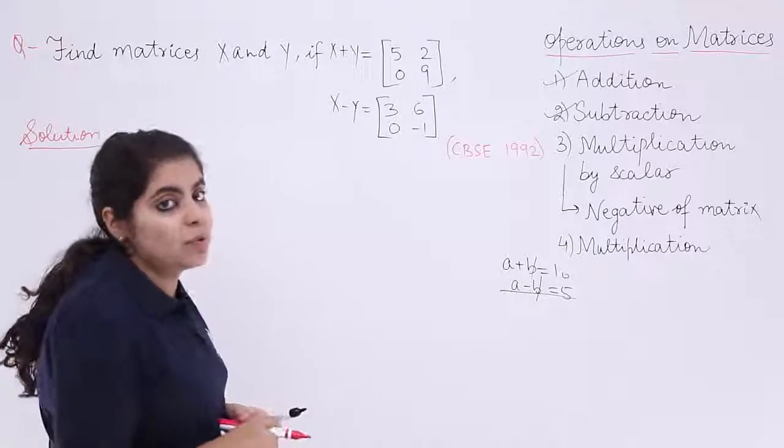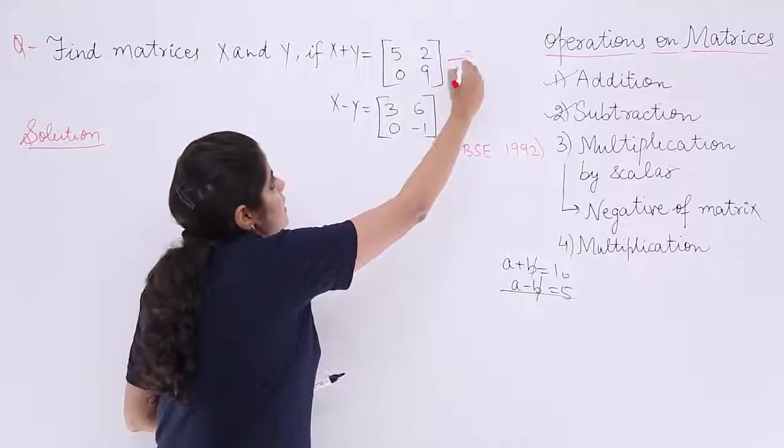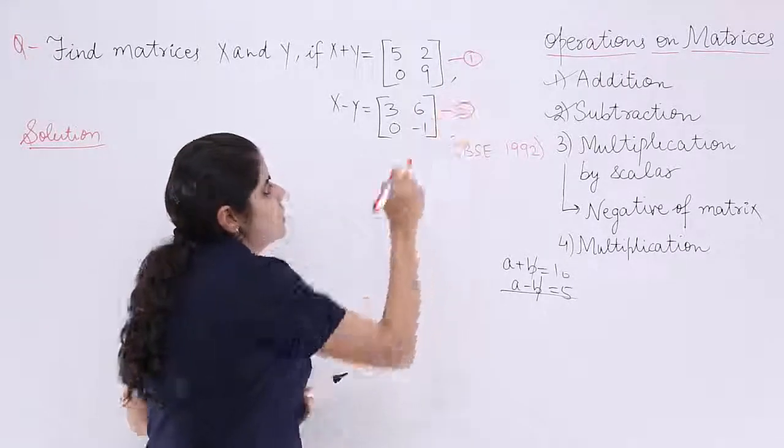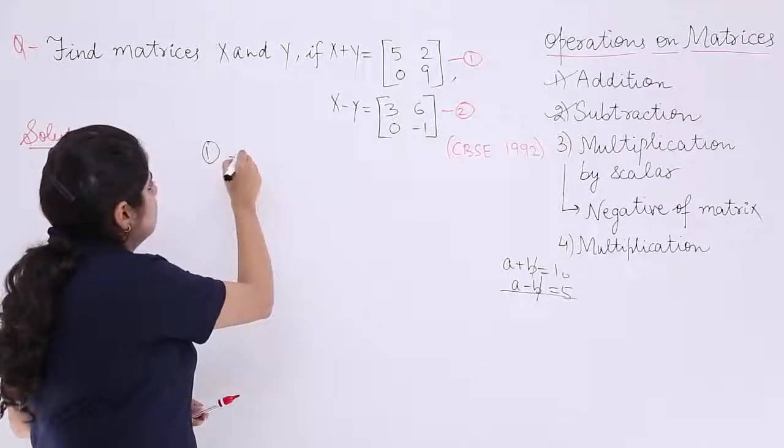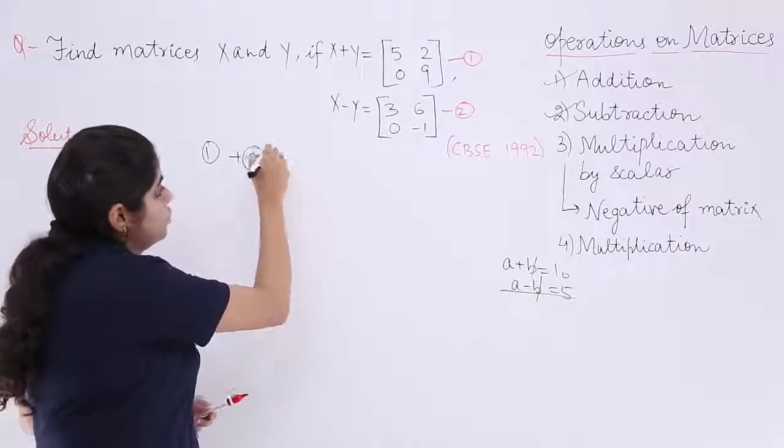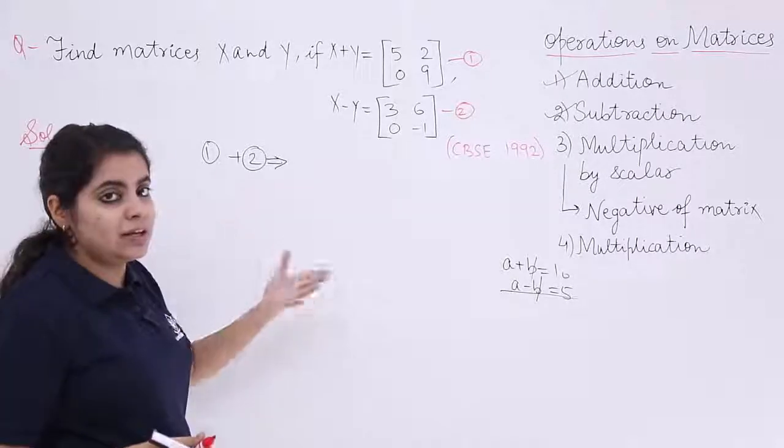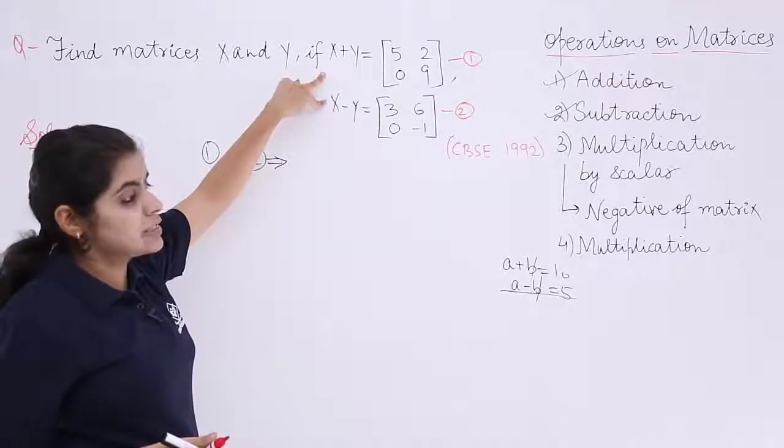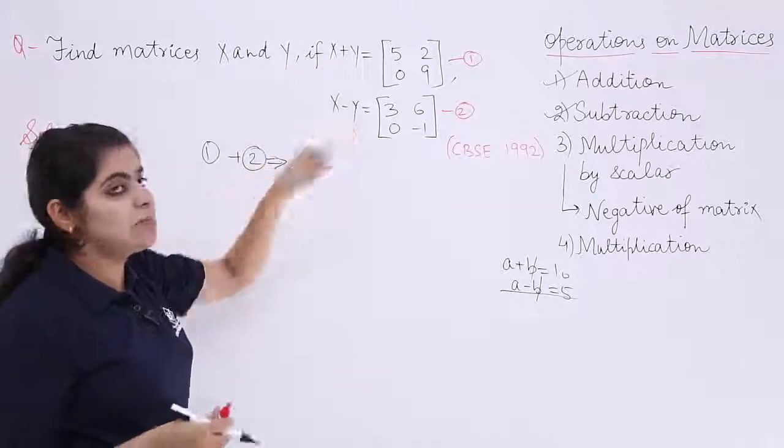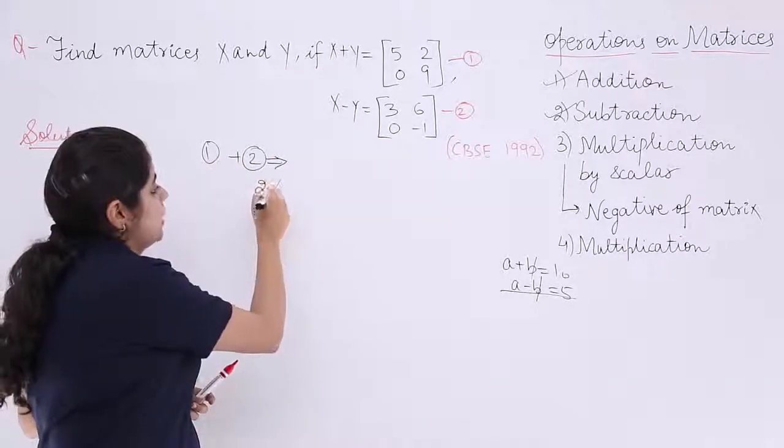So that is what I am going to do. If I consider this as equation 1 and I consider this as equation 2, I know my solution would go in the manner: 1 plus 2 is given to me. When 1 plus 2 is given to me, I used to find 1 plus 2. So X plus Y, X minus Y, plus Y minus Y gets cancelled, I get 2X.